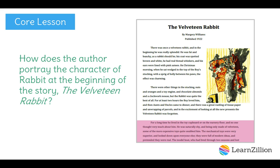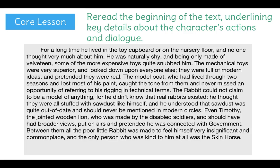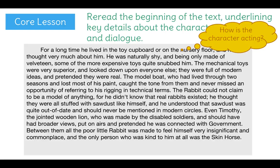That's the part in pink. The good stuff starts at the bottom of page 1 and will continue until the bottom of page 3. So first, I'm going to reread the beginning of the text, underlining key details about the character's actions and dialogue. Since I've read this section already, I'm really only looking for the details that tell me how the character is acting. First, I see that he was naturally shy, and that some of the more expensive toys quite snubbed him. Even if I'm not sure what this snubbed part means, it seems like it could be an important part of how Rabbit will act or react, so I'm going to keep that in mind as I keep going.